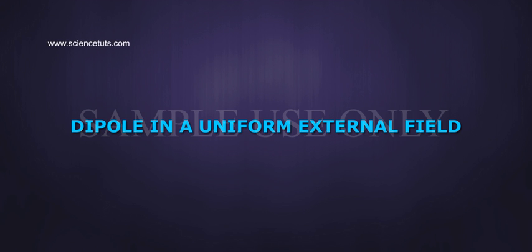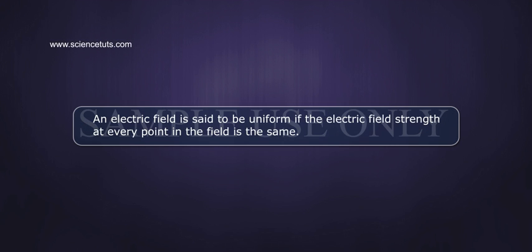Dipole in a Uniform External Field. An electric field is said to be uniform if the electric field's strength at every point in the field is the same.